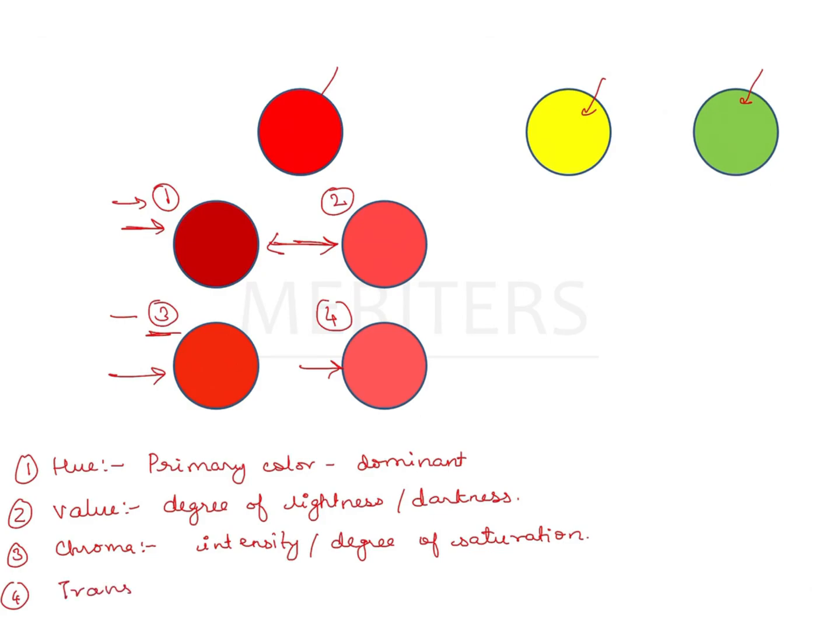The fourth option that is given is translucency. Although it is not a dimension of color, we will discuss it because it is given in the option. Translucency is nothing but the property of the material to allow some amount of light through it. So if light can pass through easily, it is a translucent material. If it cannot, it is an opaque material.